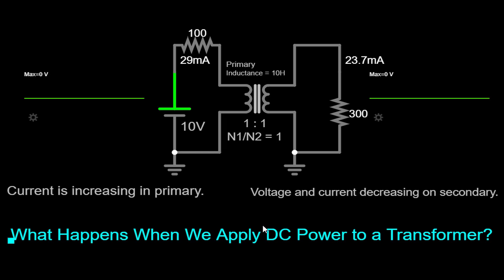Before we delve into the topic, let's take a moment to recap what transformers are and how they work. A transformer is an electrical device that transfers electrical energy between two or more circuits through electromagnetic induction. It consists of two coils of wire, known as primary and secondary windings, wrapped around a common iron core.